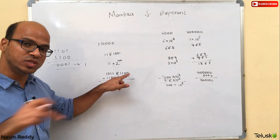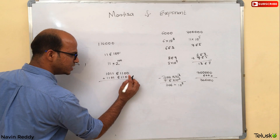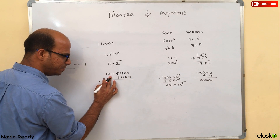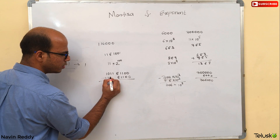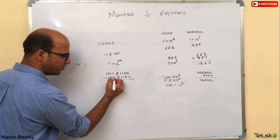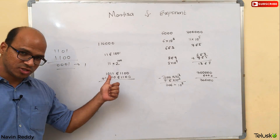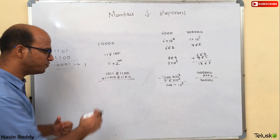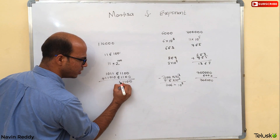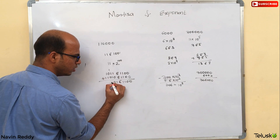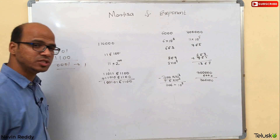Since we are reducing the exponent by 1, we have to shift the Mantissa bits by one position. So the initial Mantissa 1101 becomes 11010 — we add one extra zero by shifting. Now you can write: 11010 E 1100 plus 1011 E 1100, and perform the addition on the Mantissa values. That is your actual result.